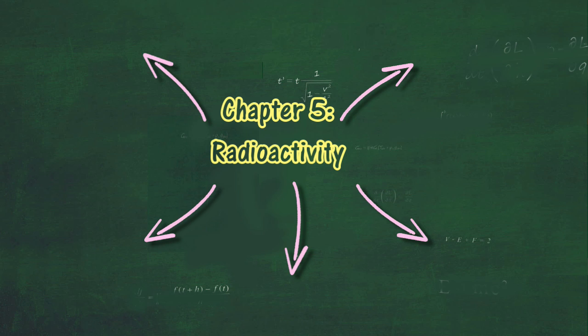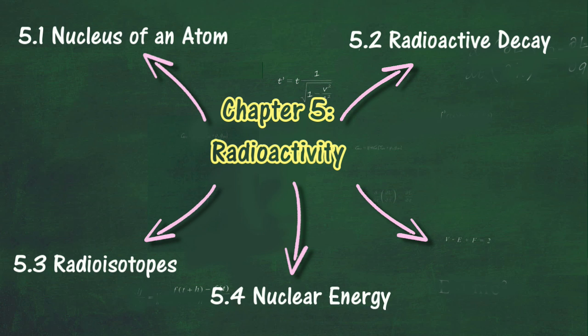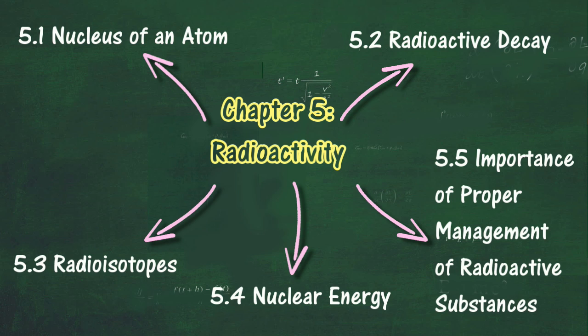There are five main sections in this chapter: 5.1 Nucleus of an Atom, 5.2 Radioactive Decay, 5.3 Radioisotopes, 5.4 Nuclear Energy, and 5.5 Importance of Proper Management of Radioactive Substances.